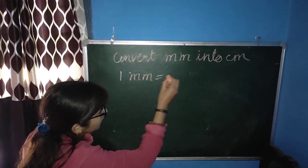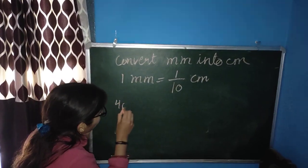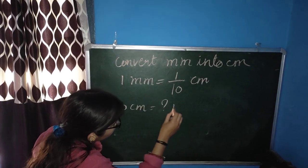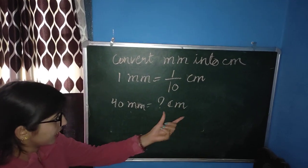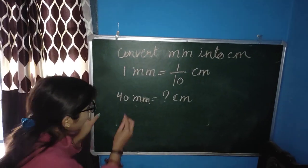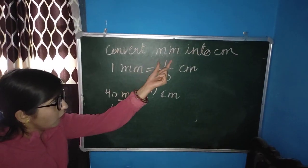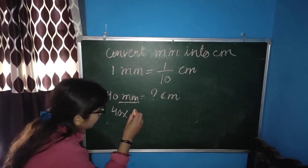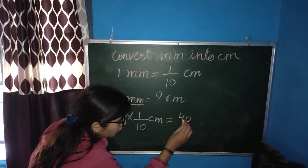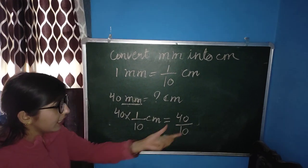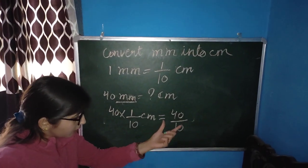Now we convert mm into cm. Remember the formula: 1 mm is equal to 1 by 10 cm. We want to convert 40 mm into cm — that is, how many cm are in 40 mm? We write 40 multiplied by the value of 1 mm, which is 1 by 10 cm. So we get 40 divided by 10.